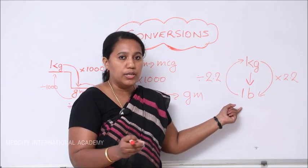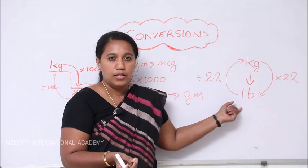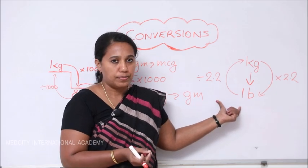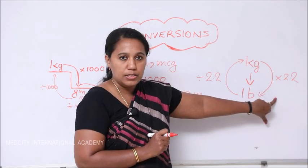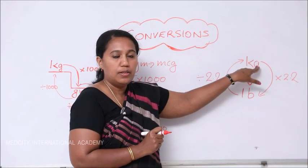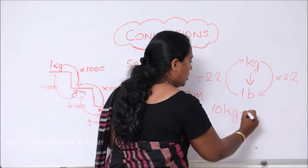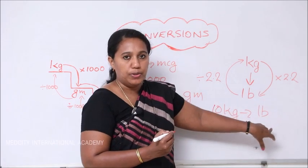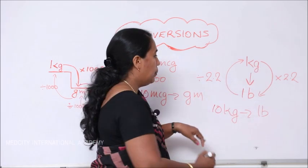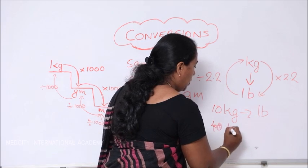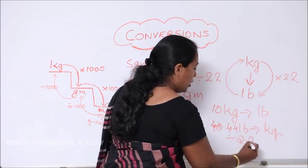We also have the conversion of kilograms to pounds. Pound, abbreviated as lb, is the most common unit used in the UK and US. To convert kilograms to pounds, multiply by 2.2. To convert pounds to kilograms, divide by 2.2. For example, 10 kilograms to pounds is 10 × 2.2. To convert 44 pounds to kilograms, it is 44 ÷ 2.2.